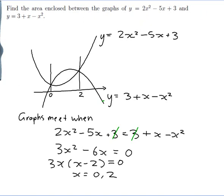Because this area here is the area underneath this function here. So the area underneath 3 plus x minus x squared.